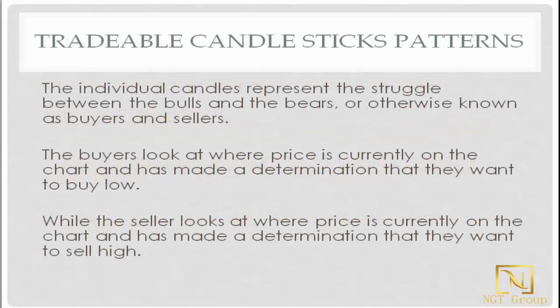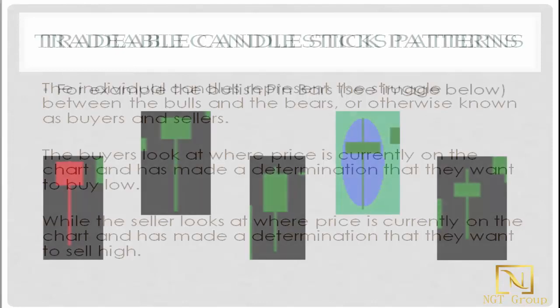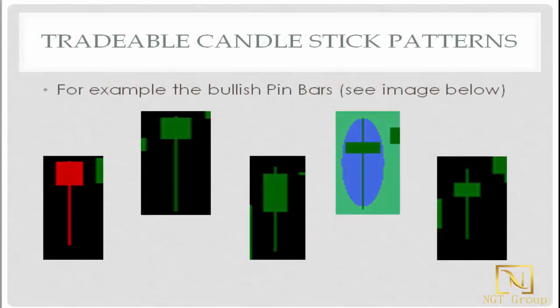The individual candles represent the struggle between the bulls and the bears, otherwise known as buyers and sellers. The buyers look at where the price is currently on the chart and have made a determination that they want to buy low, while the seller looks at where the price is and has made a determination that they want to sell high. For example, the bullish pin bars.